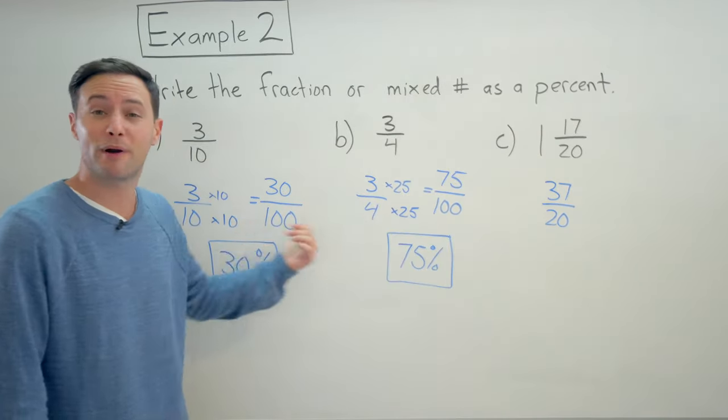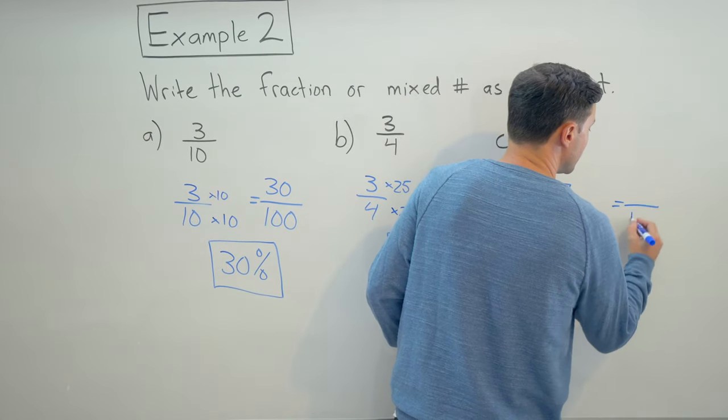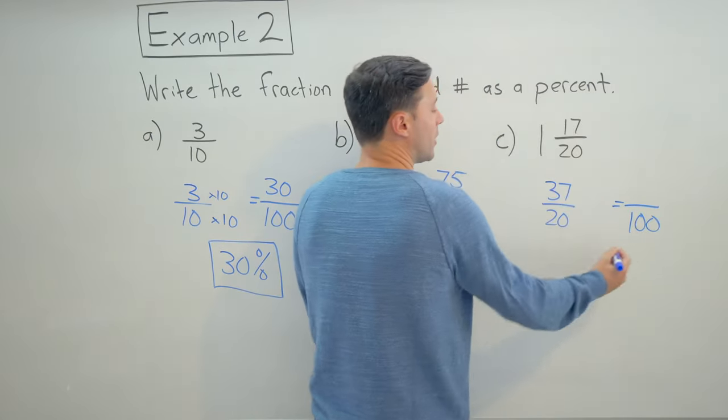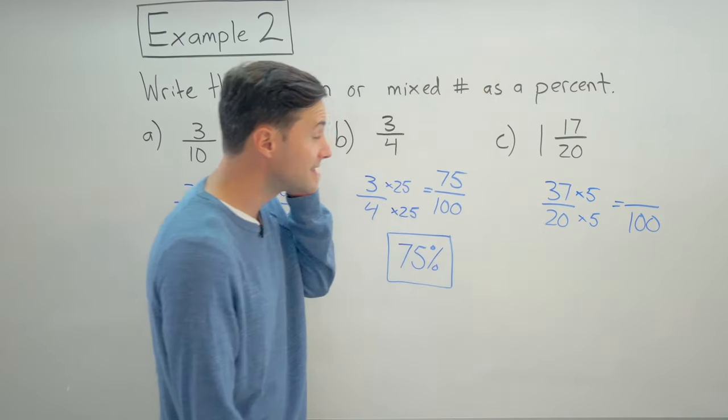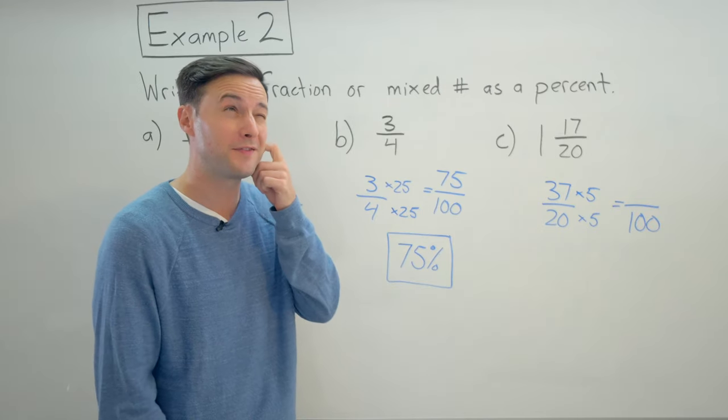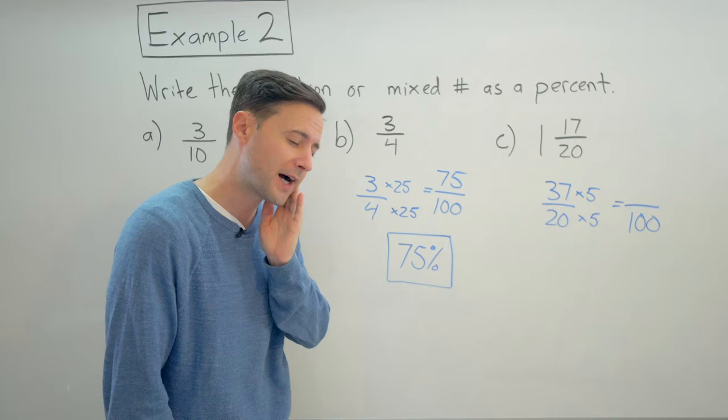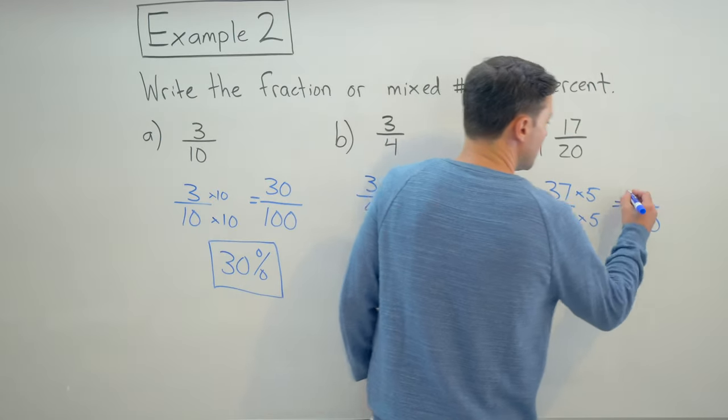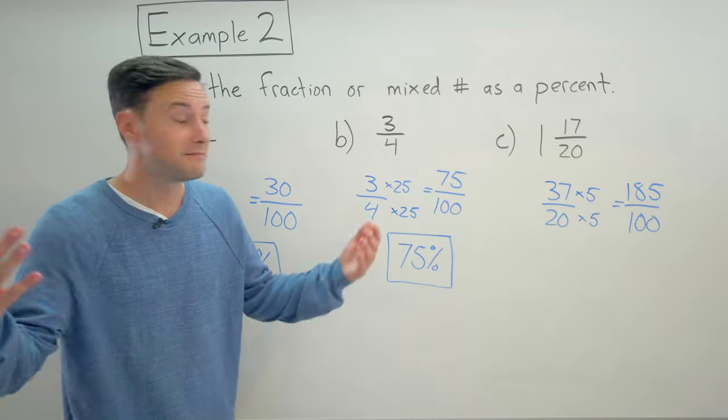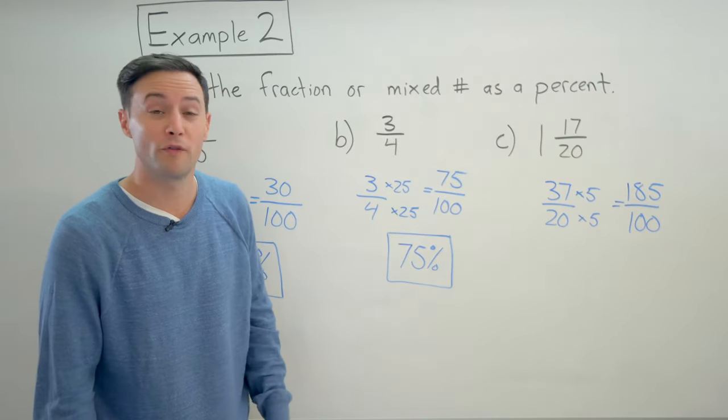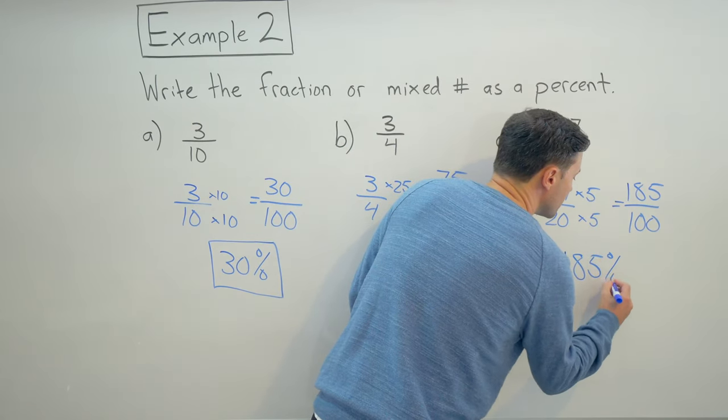And now it's the exact same process as the first two. So we're trying to get the denominator to a hundred from twenty to a hundred. Pretty simple. Times five. Same to the numerator. And thirty seven times five. Well, thirty times five is one fifty. Seven times five is thirty five. Add them together. One fifty and thirty five is one eighty five.